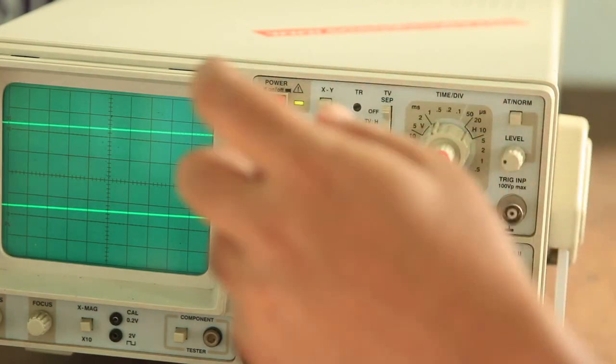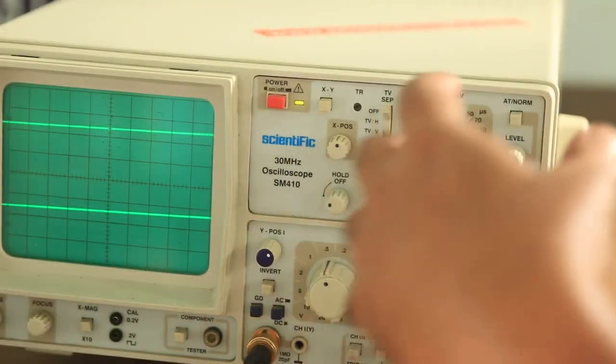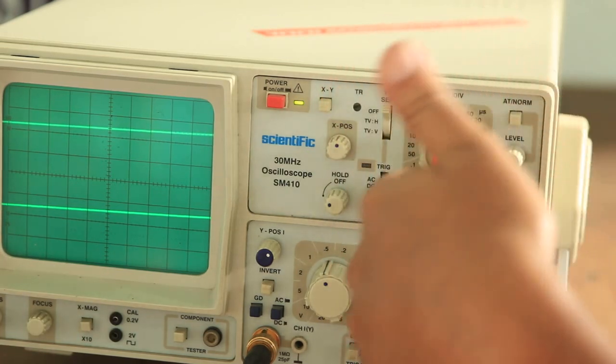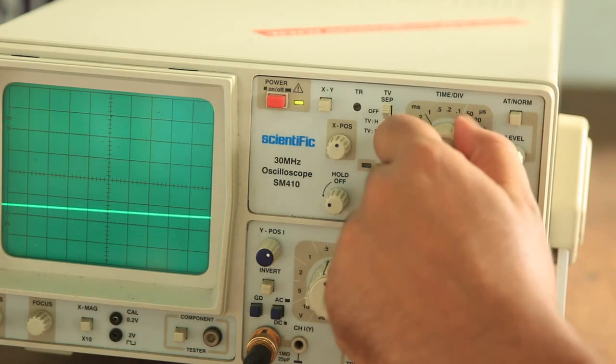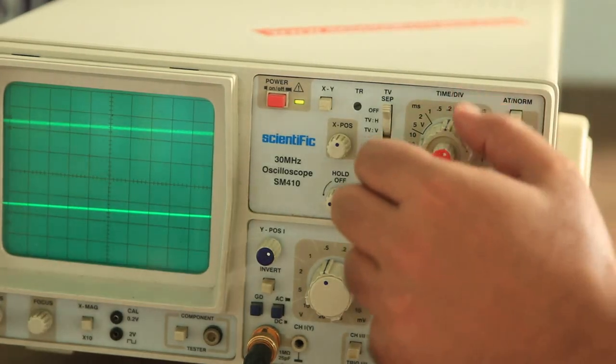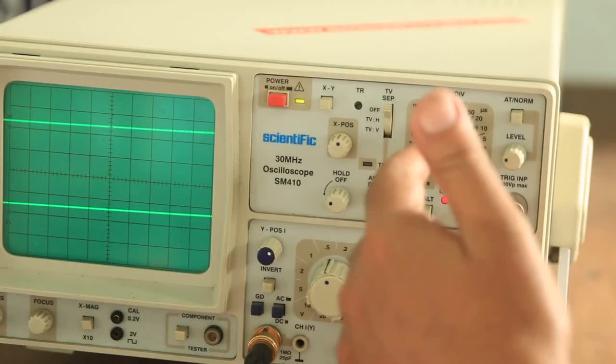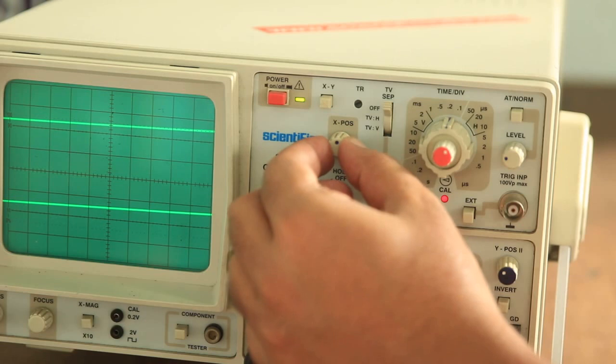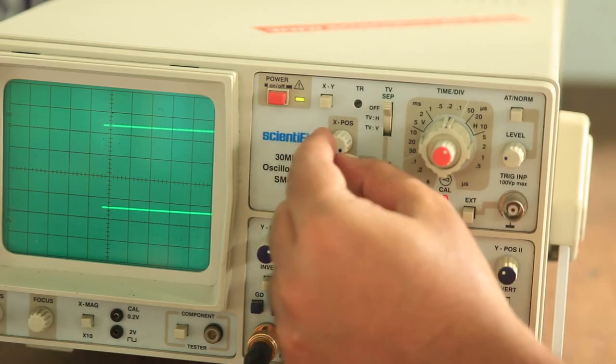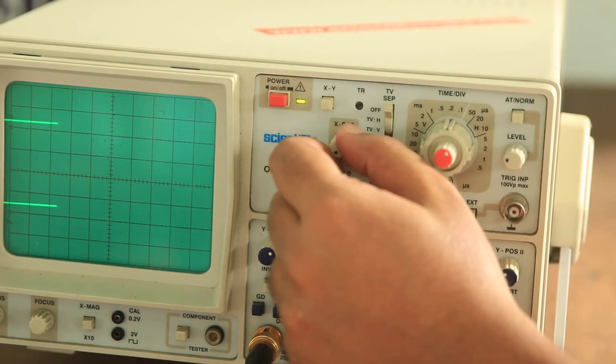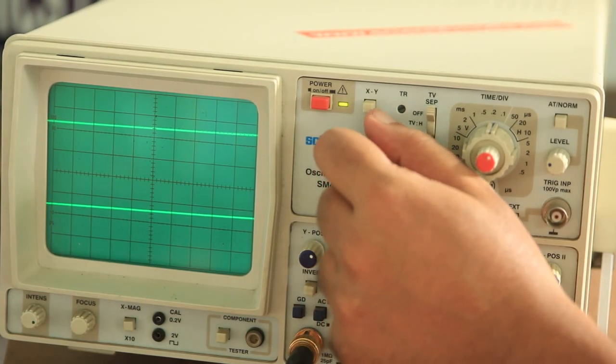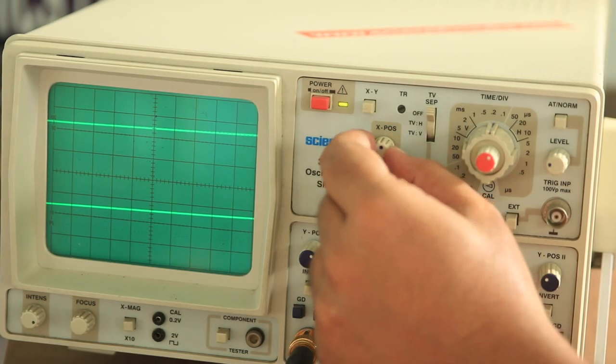Then come to this third. This is the knob by which we can measure the frequency of the incoming wave. Here also you can see there are so many numbers written circularly, and by rotating them we change the time per division. This counts in horizontal direction. This knob is called the X position knob and it changes those two lines horizontally from left to right.